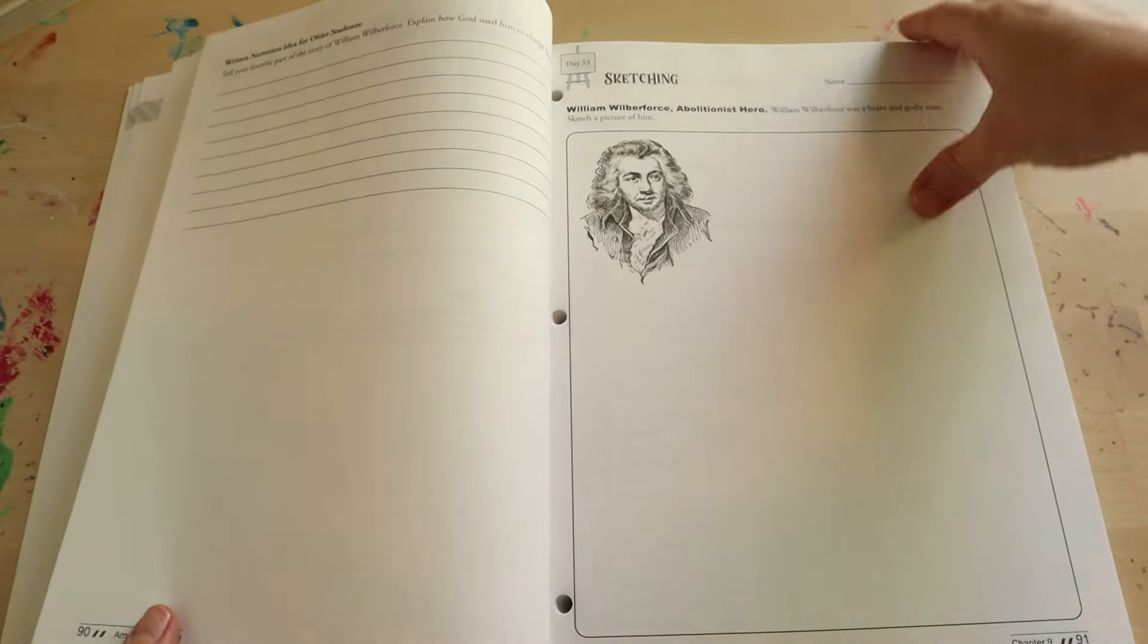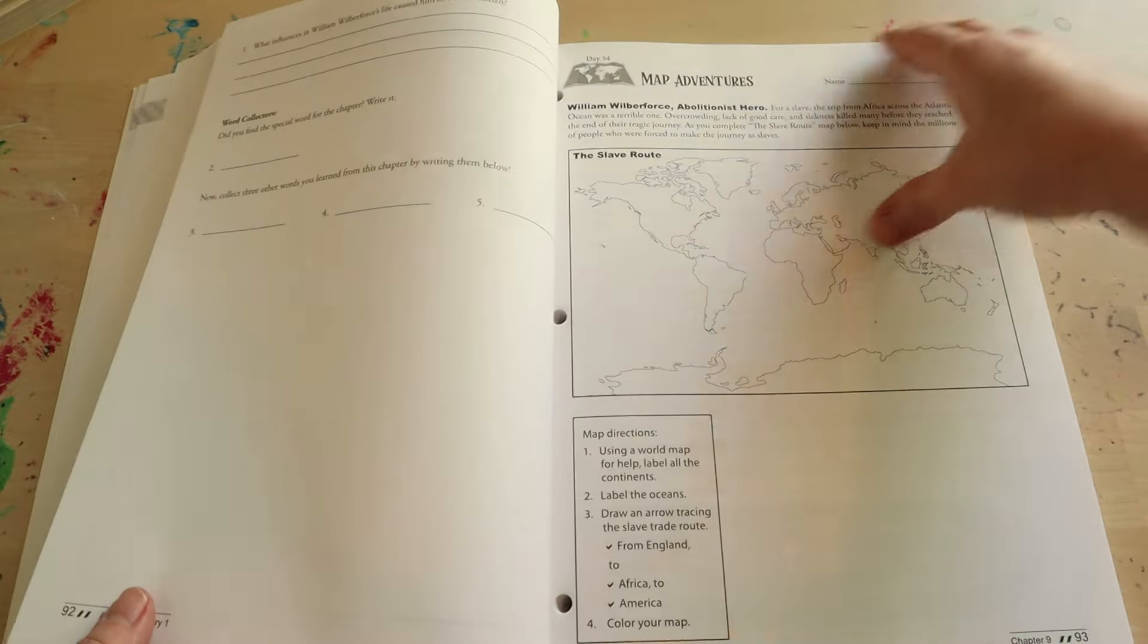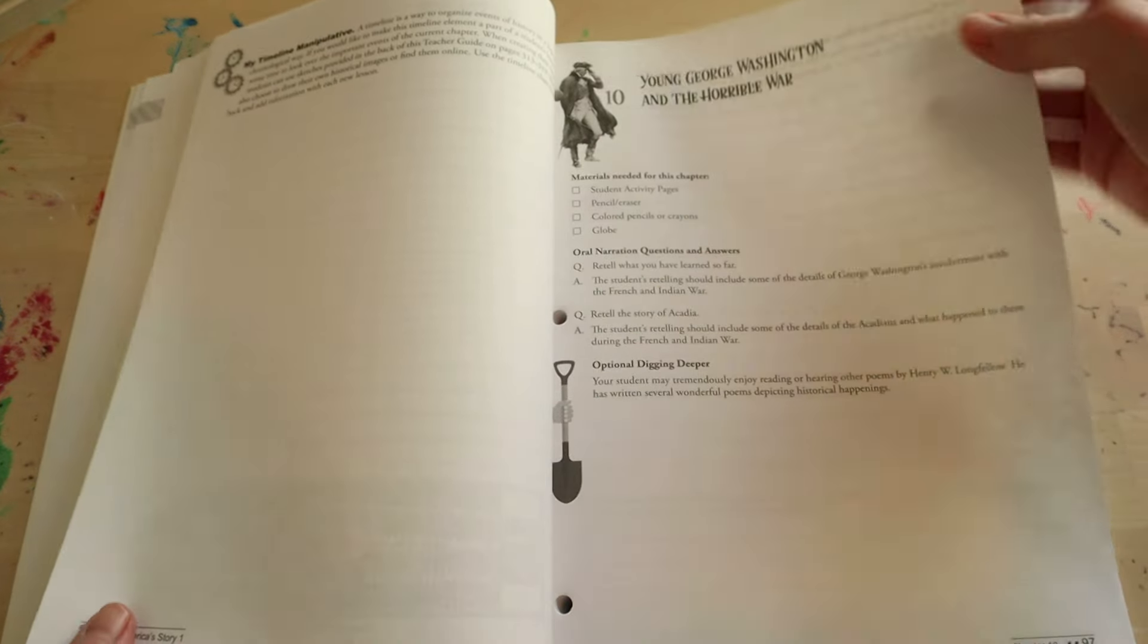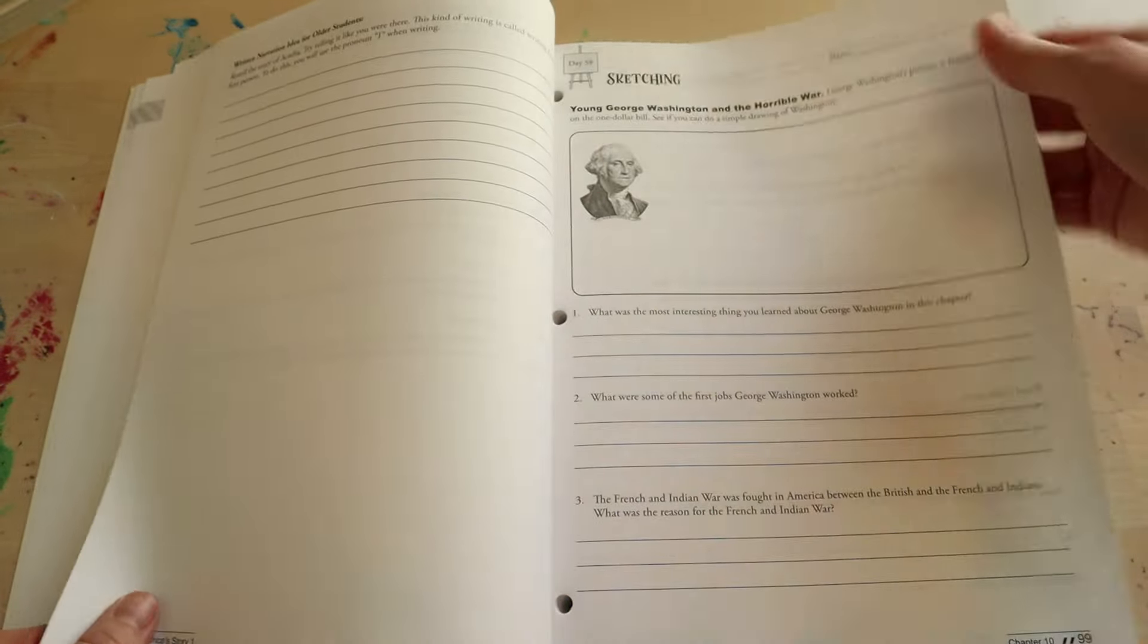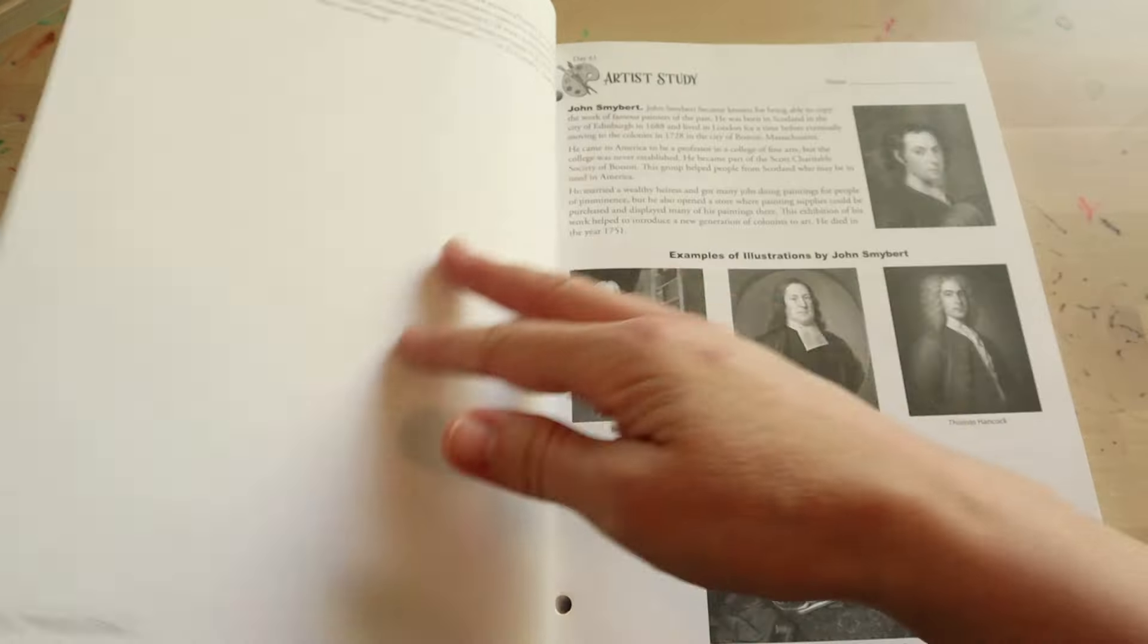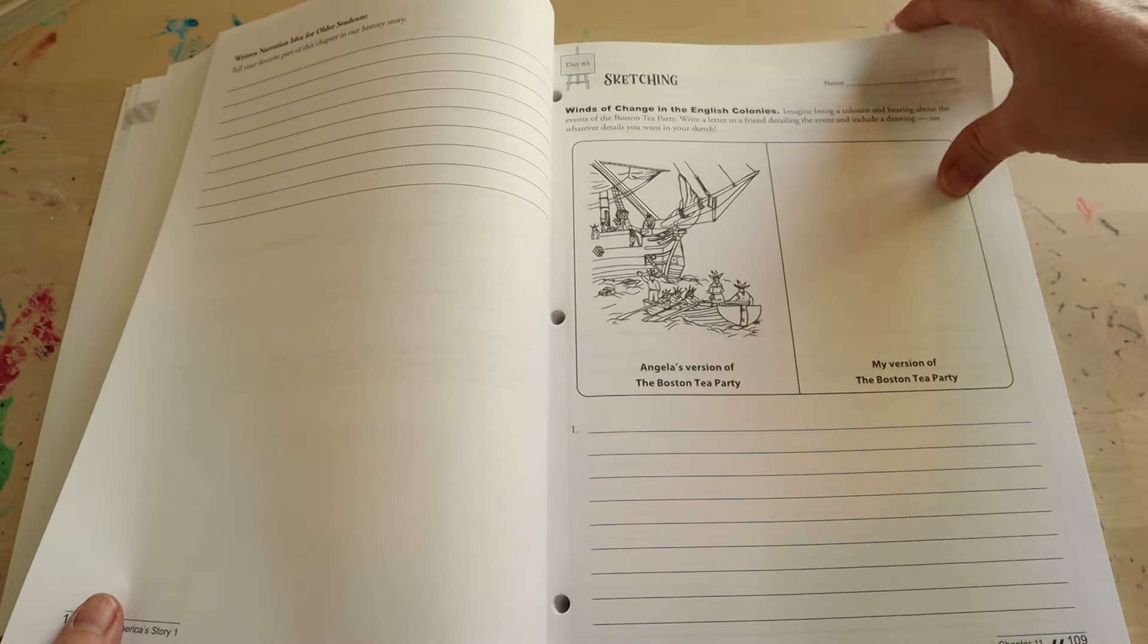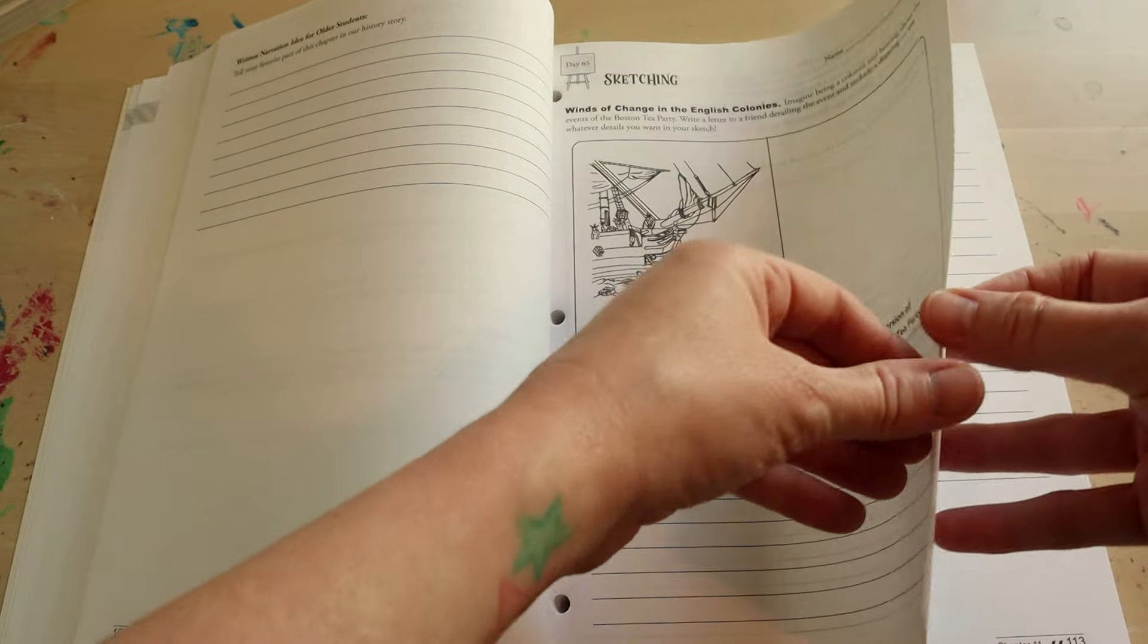The way the lessons work is the beginning of each week will start with a note to the parent or teacher about the upcoming chapter. This is followed by a supply list that you're going to need for the week, and then it's going to have oral narration questions with the answers and optional digging activities on that week's topic.